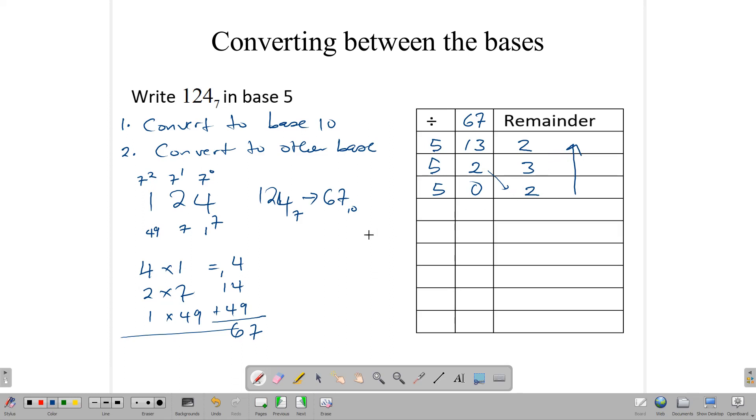So our answer to the question 124 in base 7 is the same as, writing it this way, 2, 3, 2 in base 5. So this is how we convert between other bases, from one base to another base. So we have a number in base 7, we want to write it in base 5, this is how we do it.